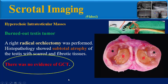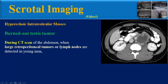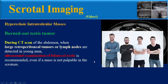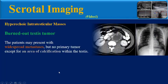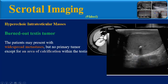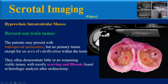There was no evidence of a primary germ cell tumor in the testis. We must keep in mind that during CT scan of the abdomen, when large retroperitoneal tumors or lymph nodes are detected in young men, ultrasound examination of bilateral testes is recommended even if a mass is not palpable. Patients may present with widespread metastasis but no primary tumor except for an area of calcification. They often demonstrate little or no remaining viable tumor, with mostly scarring and fibrosis found at histologic analysis after orchiectomy.